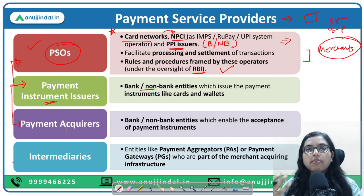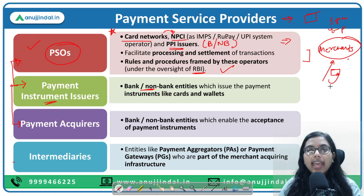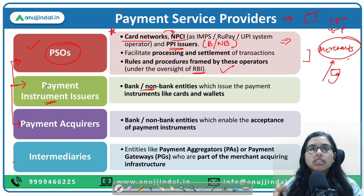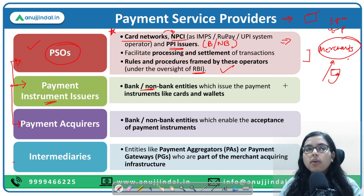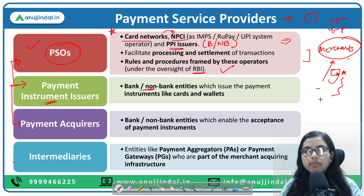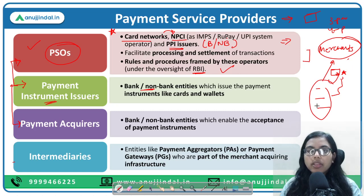Next are payment acquirers. When a customer makes a payment, it goes to the merchant. The bank that actually acquires and holds the payment for the merchant is known as the payment acquirer — it can be a bank or non-bank. The acquirer collects the charges decided by the payment service operators, for example 0.5% per transaction, retains its share of 0.25%, and then distributes the remainder among the PSOs, instrument issuers, and other intermediaries.